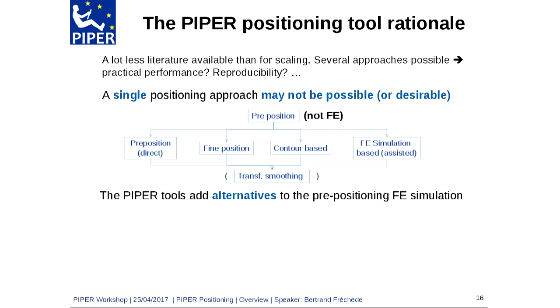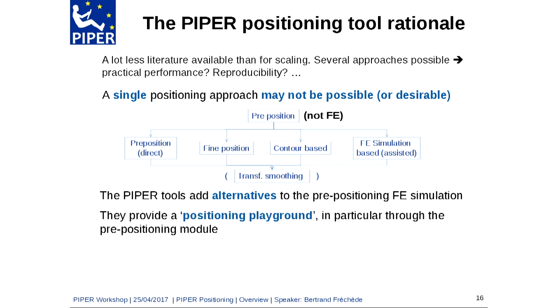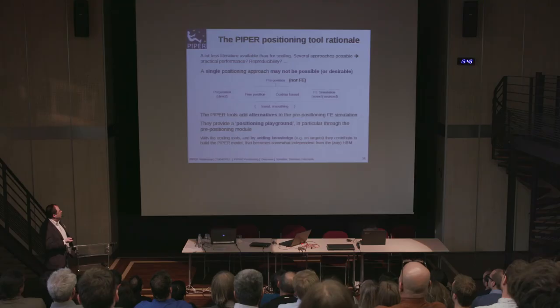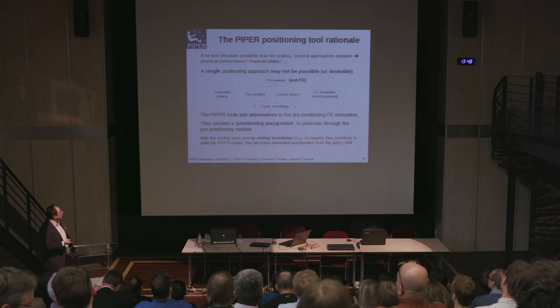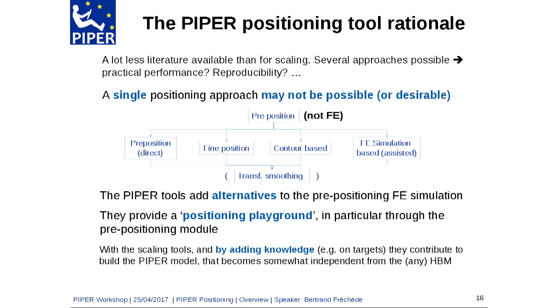FE simulation is still available and can be assisted by the Piper tools. But as described, the tools provide a positioning playground, particularly through the pre-positioning module because it is quite interactive. By adding knowledge through the scaling and positioning tools, you contribute to building a Piper model that is somewhat independent from any specific HBM.